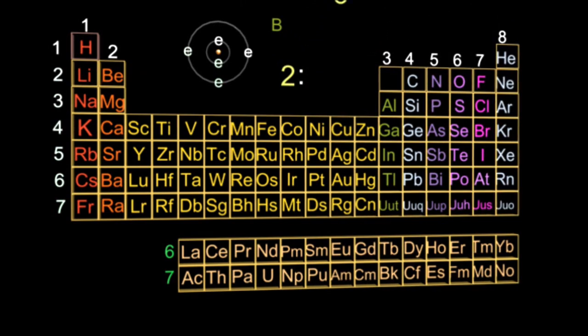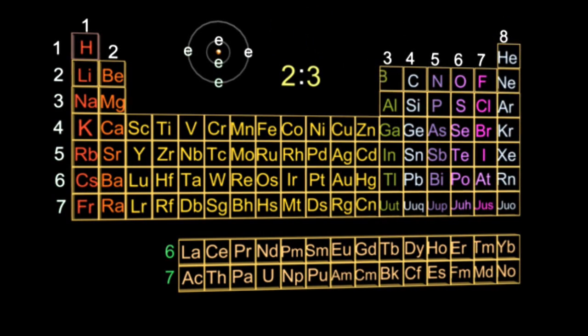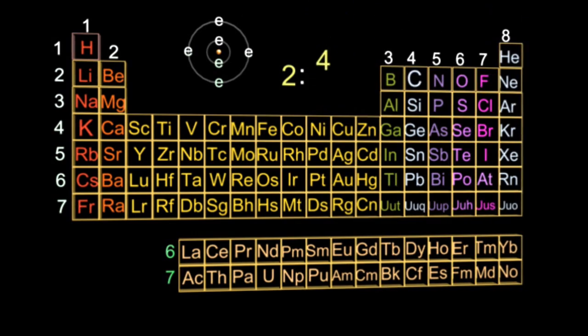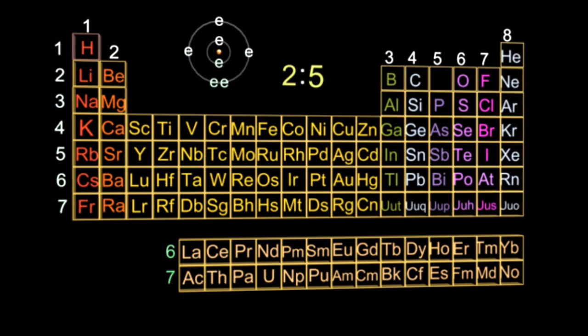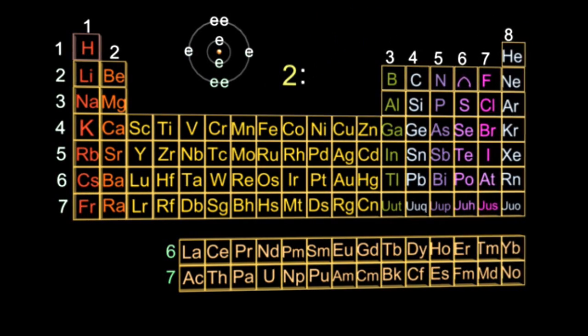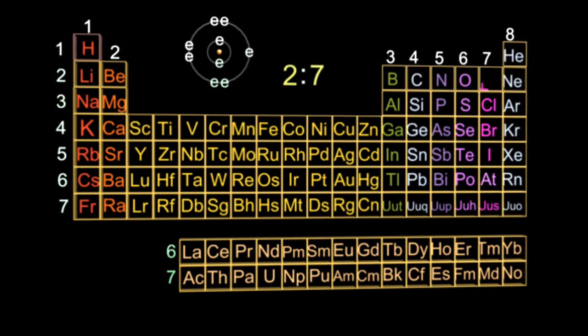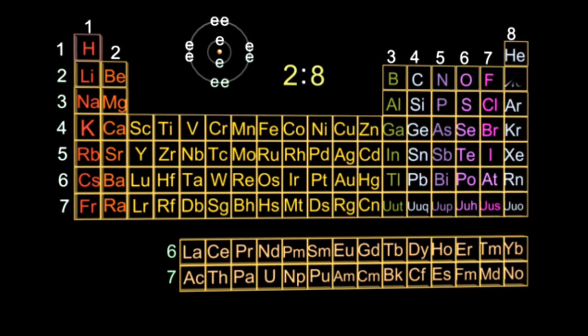I'm not going to go all the way through at this speed. Let's speed up a bit. So carbon is two, four. Nitrogen, two, five. Oxygen, two, six. Fluorine, two, seven. And finally, neon is two, eight.